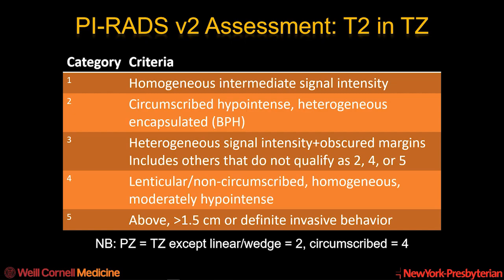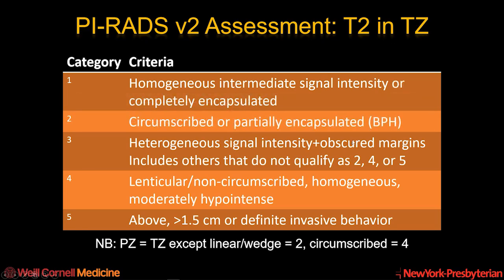An important note about T2-weighted imaging categorization in the peripheral zone: linear or wedge-shaped lesions are category 2, while a circumscribed lesion in the peripheral zone is category 4. The T2 categorization in the peripheral zone is not particularly important overall. In PIRADS version 2.1, completely encapsulated lesions will be deprecated to category 1, whereas circumscribed or partially encapsulated lesions will remain category 2.